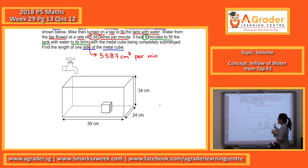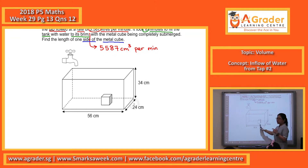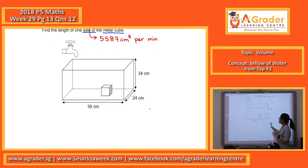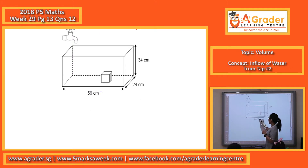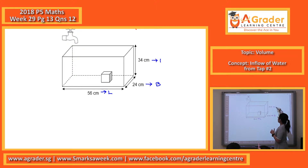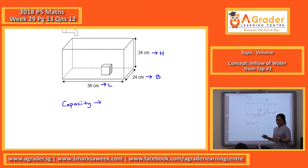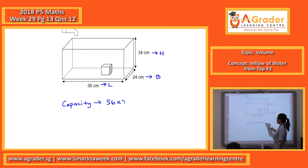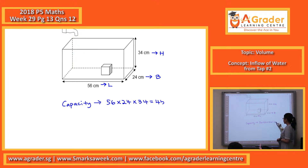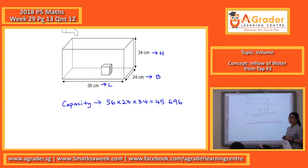So our first step here is the capacity of the tank. Capacity is the maximum volume of the tank. So length times breadth times height — we multiply them together — and we get 45,696.